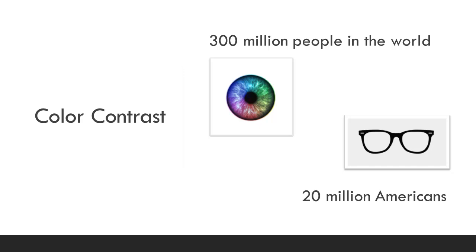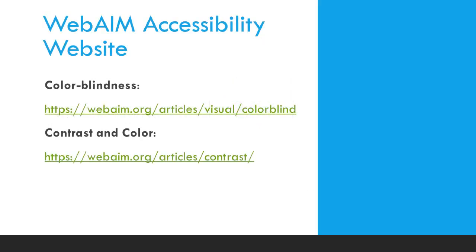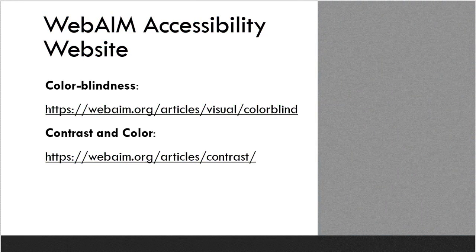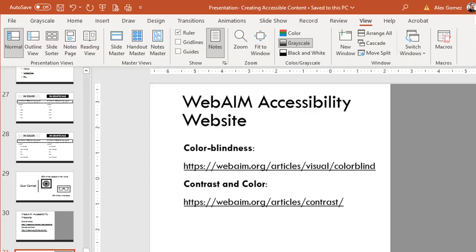Therefore, we should be deliberate about the use of color and contrast in our documents. For more information, visit Colorblindness and Contrast and Color Accessibility on the WebAIM website. You should always assume that all color will be viewed in grayscale — what you'd get if the color document were printed in black and white. If the color information or the contrast between text and background are difficult to see, adjust the use of color in your document.